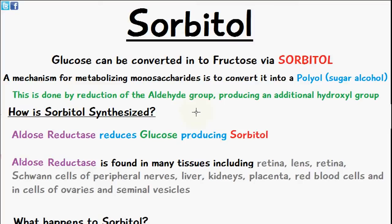Another mechanism is to convert the monosaccharide into a polyol, which is a sugar alcohol. Glucose can be converted into fructose, but first it's converted into sorbitol, which is a sugar alcohol.